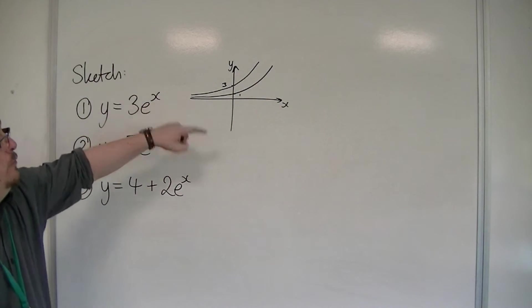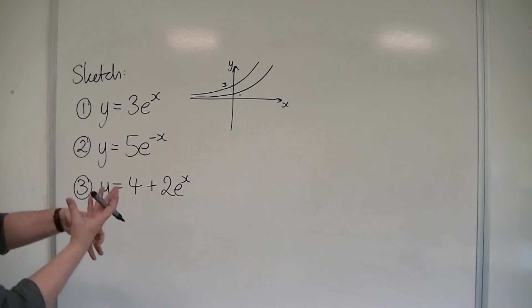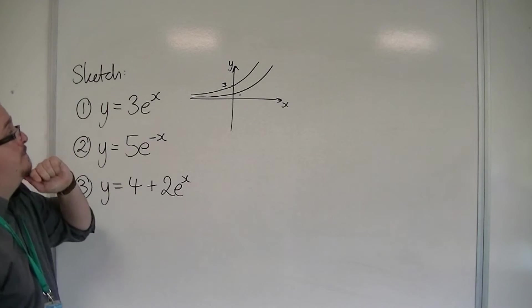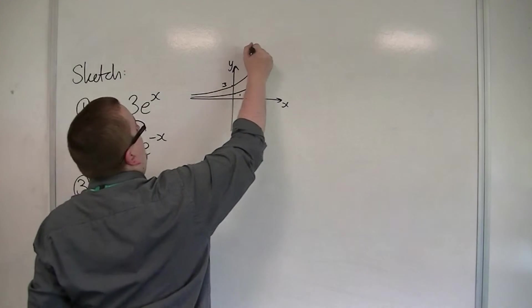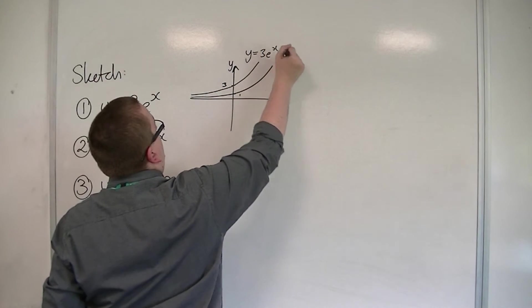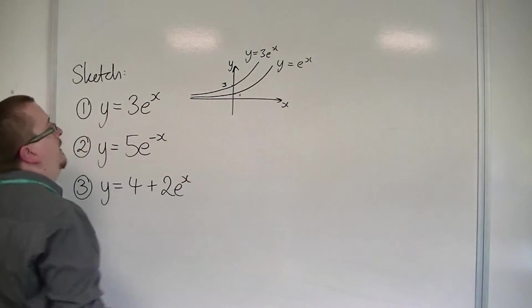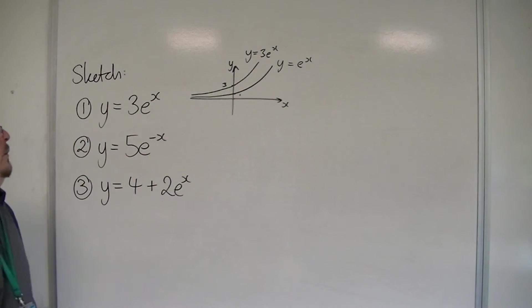And this part of the curve will be slightly above it as well, three times as high. So this would be y = 3e^x, and that would be y = e^x. That's how you could sketch that one.